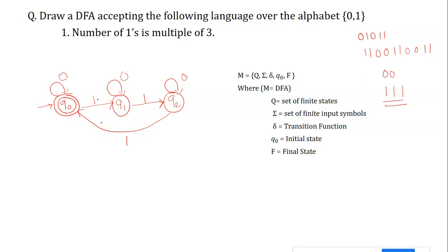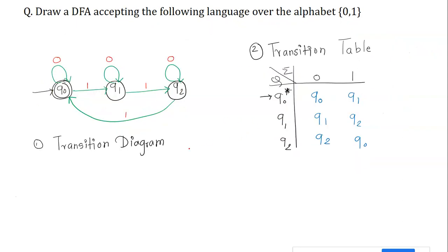To complete the formal definition: the states are Q = {q0, q1, q2}, the input alphabet Σ = {0, 1}, q0 is the initial state, and q0 is also the final state F = {q0}. Now we draw the transition table, with states as rows and input symbols 0 and 1 as columns.